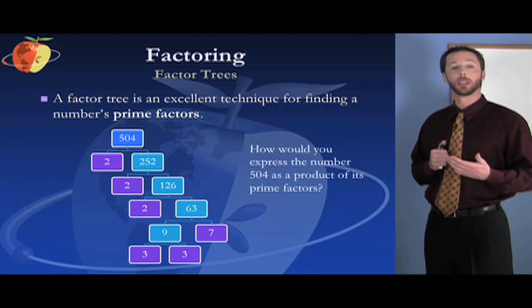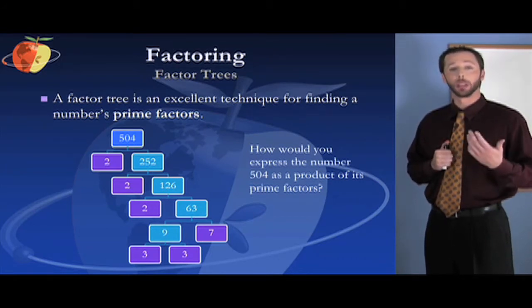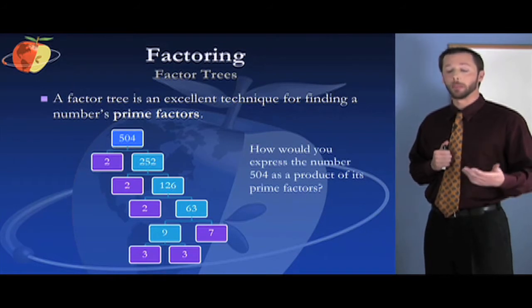You see that 126 can still be divided by something, you try two again, you get 63. 63 can still be factored, so you factor that by dividing it by something you know it's divisible by. Let's say 7, and you get 9.